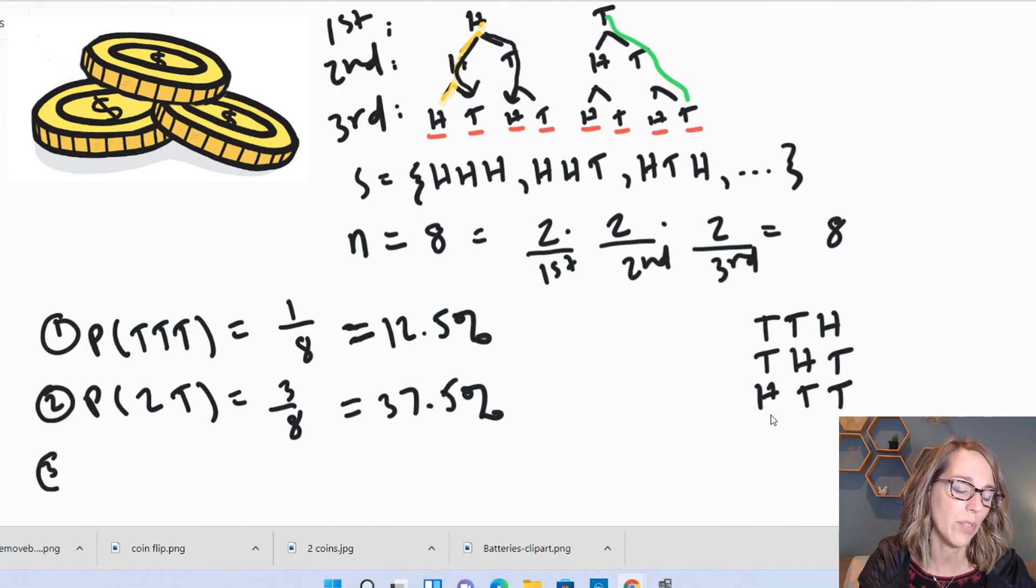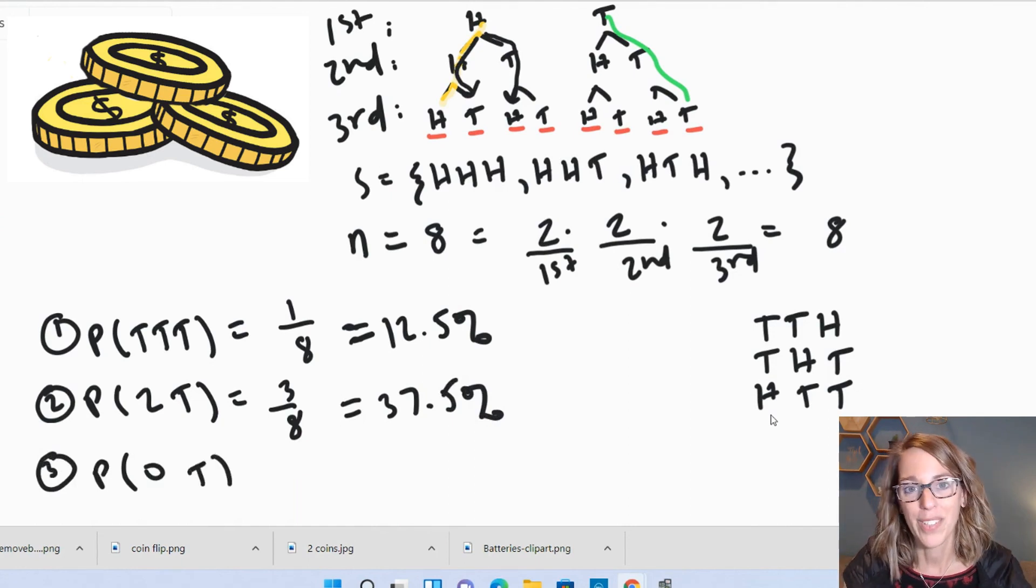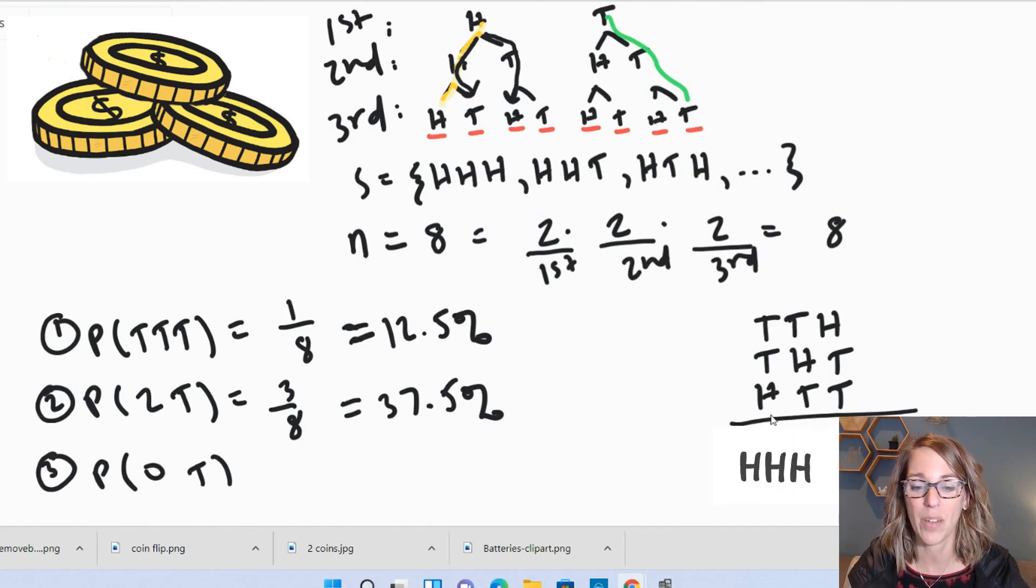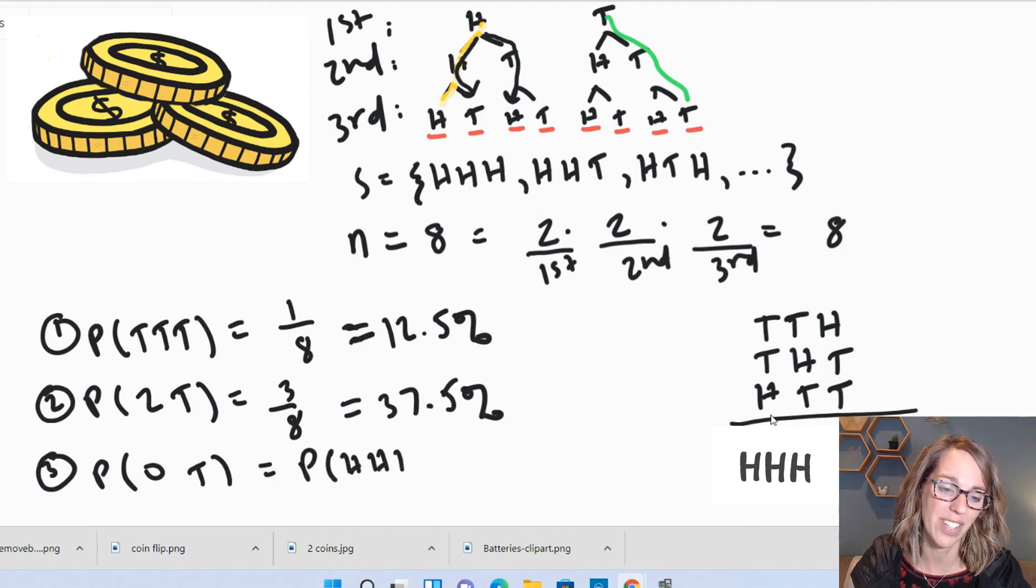Number three. What's the probability of getting zero tails? If I think about this one, zero tails, I could go through there and look for whatever has zero tails, but I know there's only one way for that to happen. The only way for that to happen is if I end up with all heads. So the probability of getting zero tails is the same as getting the probability of all three H's, which is going to be just one possibility out of the eight or that same 12.5%.